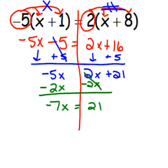The last step is to inverse the coefficient. The coefficient is negative 7, and it's multiplying, so we are going to divide by negative 7. That will leave us with an answer of x equals negative 3.